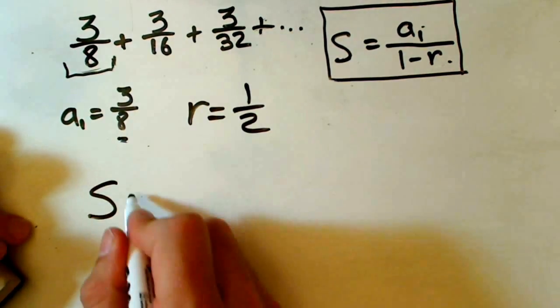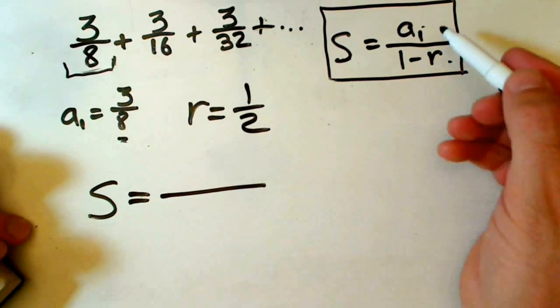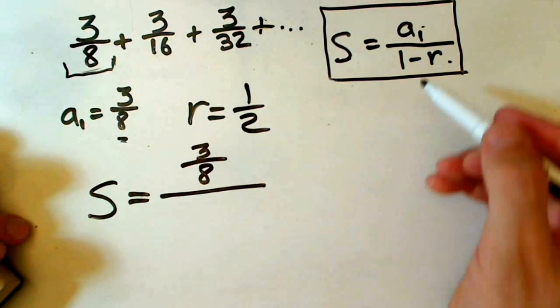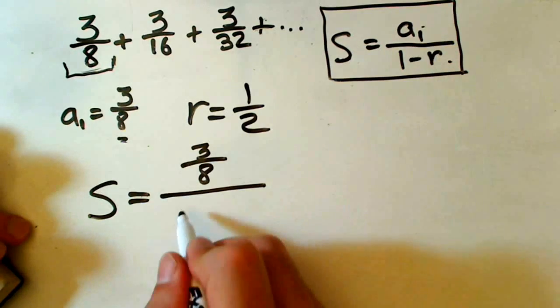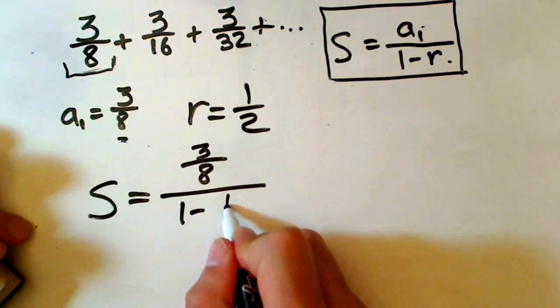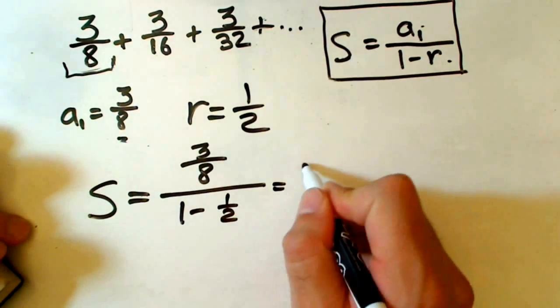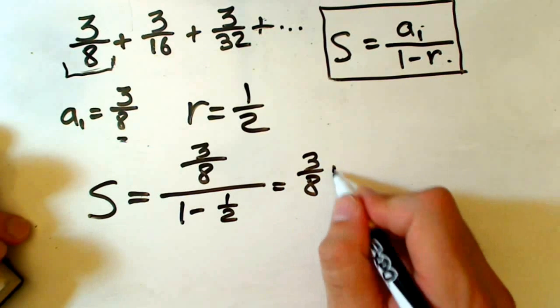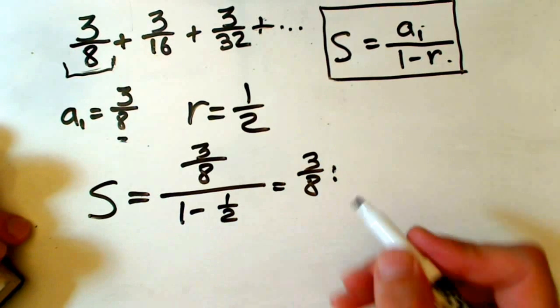First term is 3 over 8, divided by 1 minus the ratio. 1 minus our ratio, 1 minus 1 half, is just 1 half. So we have 3 over 8 divided by 1 half.